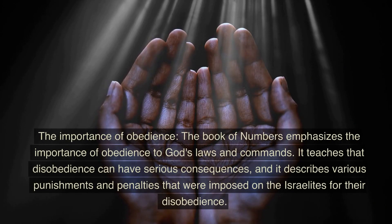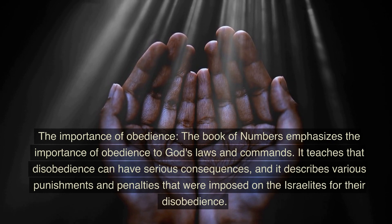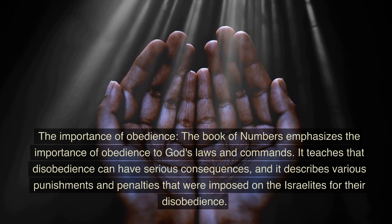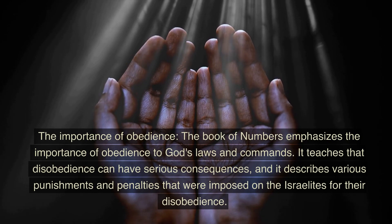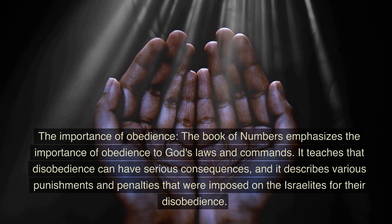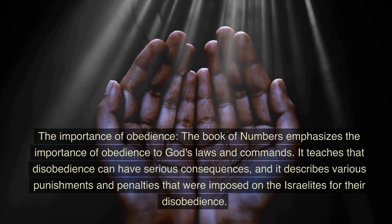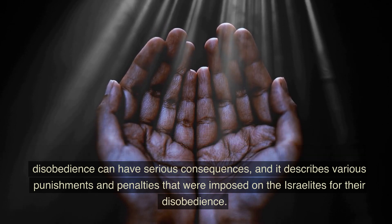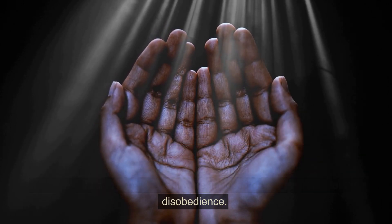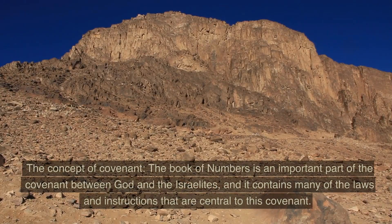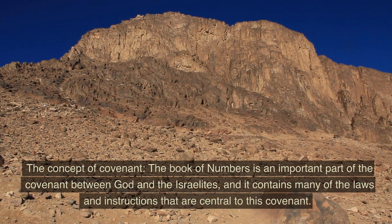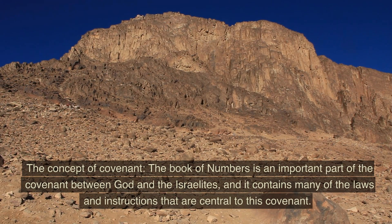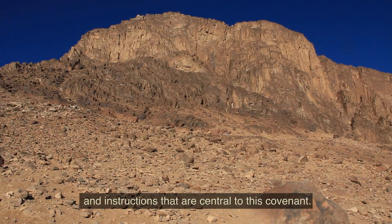The importance of obedience. The Book of Numbers emphasizes the importance of obedience to God's laws and commands. It teaches that disobedience can have serious consequences, and it describes various punishments and penalties that were imposed on the Israelites for their disobedience. The concept of covenant is also central — the Book of Numbers is an important part of the covenant between God and the Israelites, containing many of the laws and instructions central to this covenant.